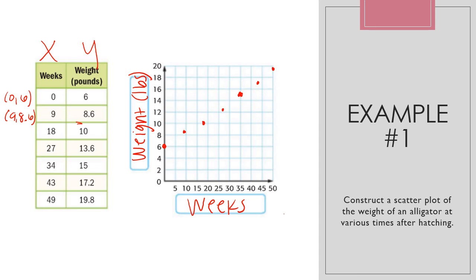With this, you can see the longer the further along the alligator gets. So the alligator is at zero weeks. So right when it was born, it was six pounds. However, 49 weeks later, it was up to 19.8 pounds. It's one way that we can look at interpreting the data on the graph.